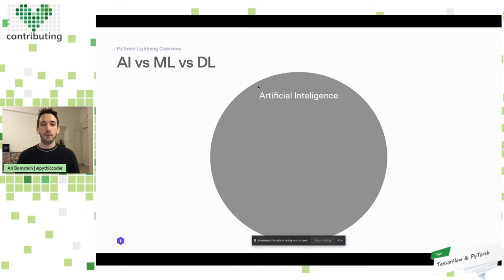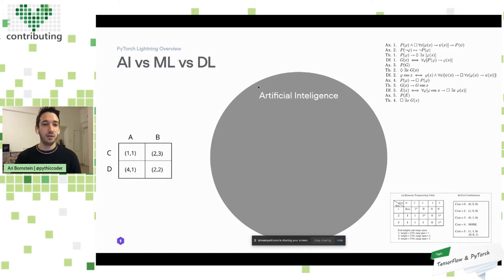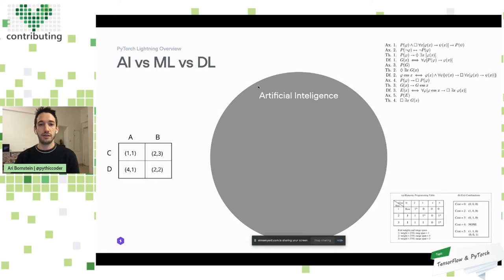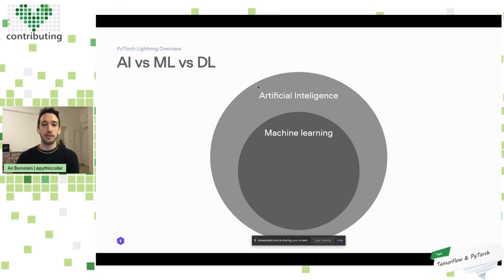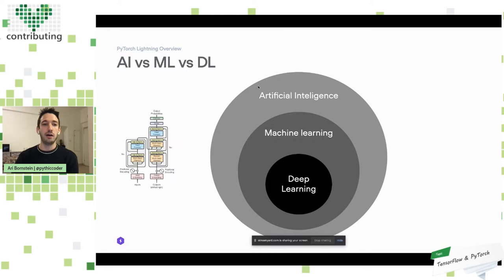We have the area of artificial intelligence, which is a general space around how we model intelligent behavior. Within AI there are tons of different methods beyond just machine learning — things like game theory, formal languages, formal logic, and even dynamic programming. Within artificial intelligence, there's a sub-branch called machine learning. Within machine learning there are many different types of methods: probabilistic methods, graph-based and tree-based methods, and methods that use neural networks but aren't considered deep learning.